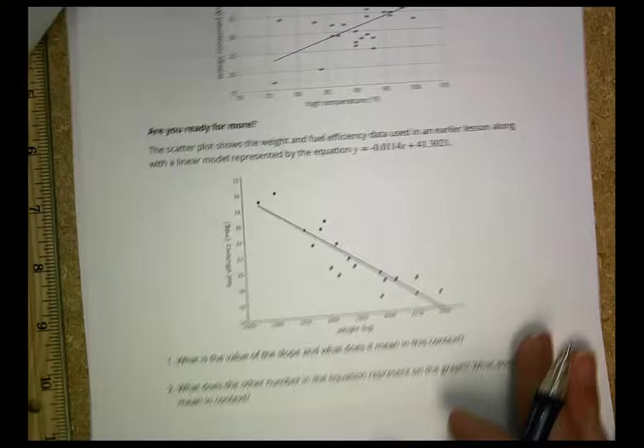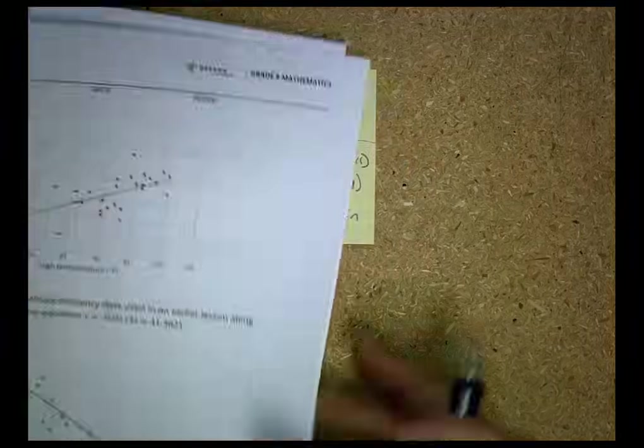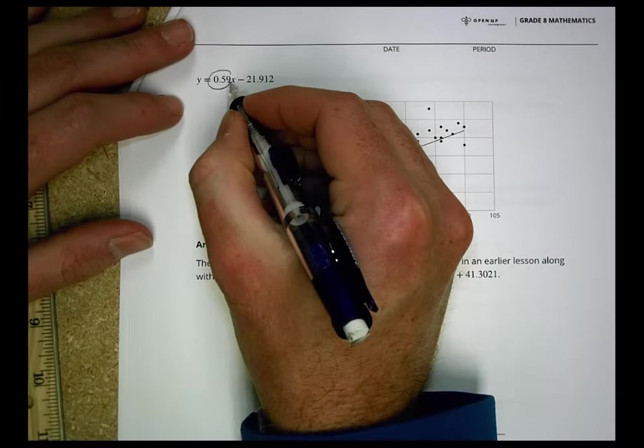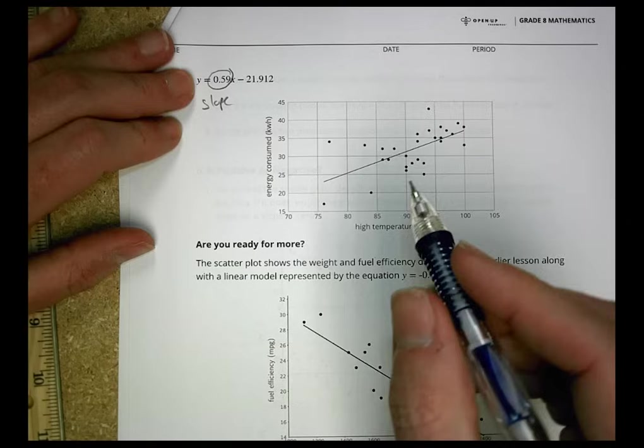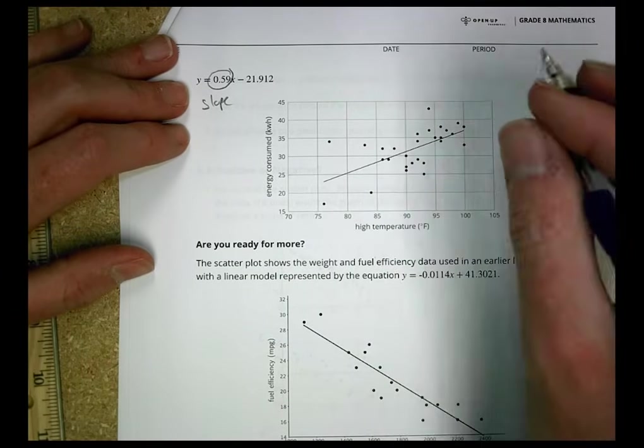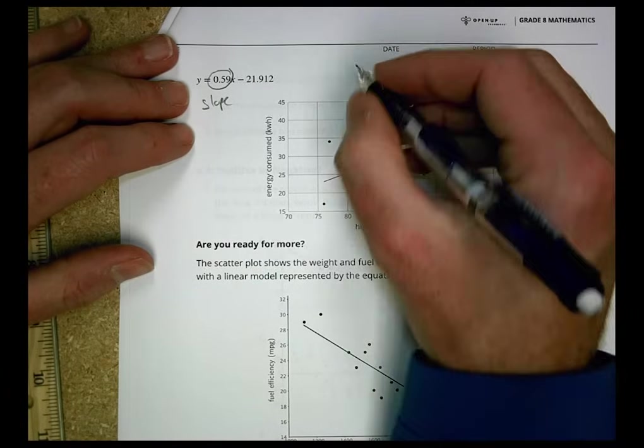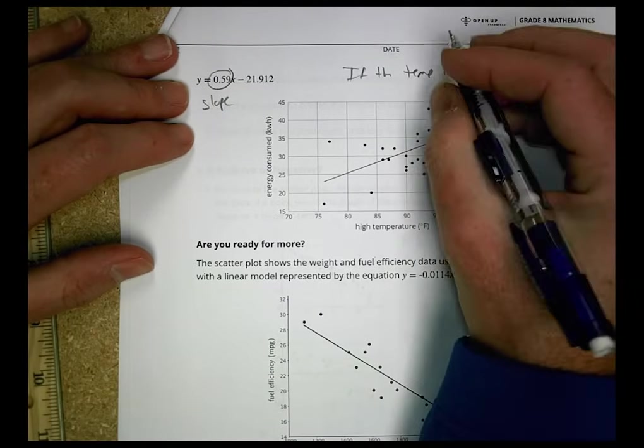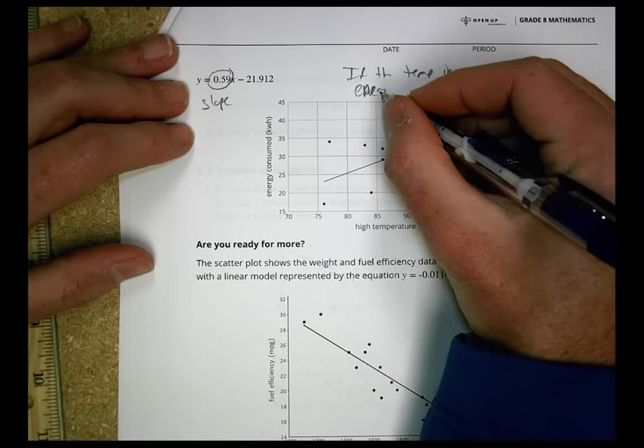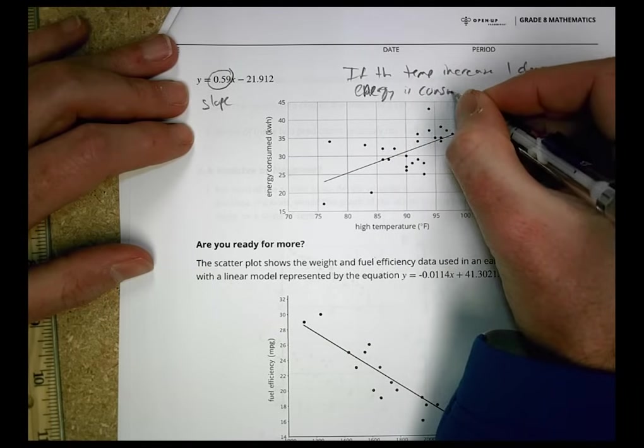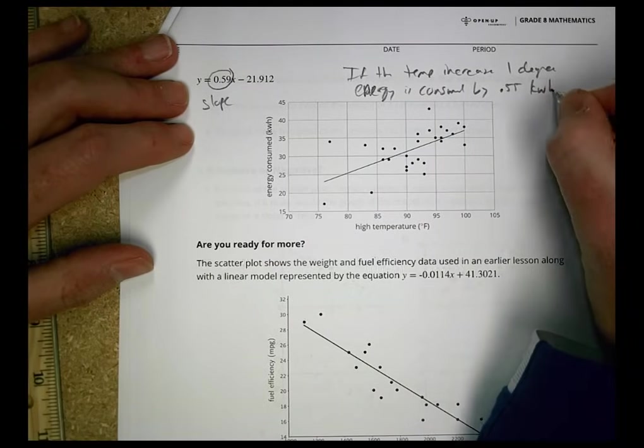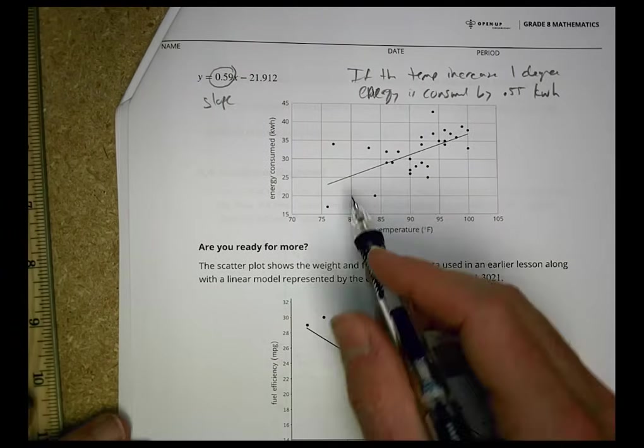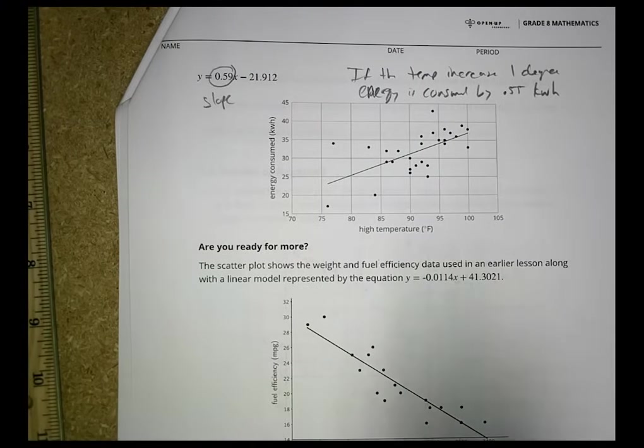The next one, we have, again, another model, a linear model. Fancy work for our nice little equation here. And what do we have? We have our slope, 0.59. And what does this mean? If the slope is there, it means that if the temperature goes up 1 degree, so if the temp increases 1 degree, energy is consumed by 0.55 kilowatt-hours. So as it goes up 1 degree, you go up another 0.55 kilowatt-hours of energy being used. And so you can see they did put a line in a best fit. It's not a great one, but it does work.